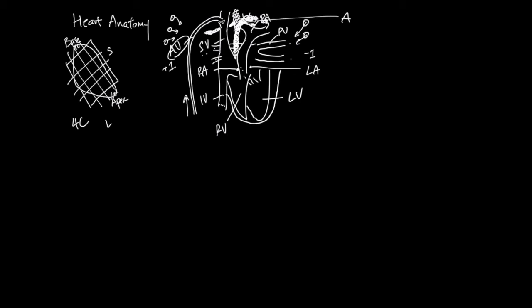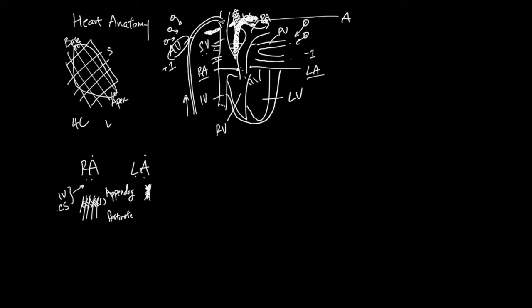Now let's talk about these heart structures, starting from the atria. The definition of a right atrium is that the inferior vena cava and the coronary sinus dump deoxygenated blood into this space. Whatever is not the right atrium is the left atrium. The appendage is wider on the right atrium and narrow but longer in the left atrium. The pectinate muscles of the left atrium are limited to its appendage, but the right atrium can have pectinate muscles all over the inner surface. The inner surface of the left atrium is a smooth atrial wall structure.